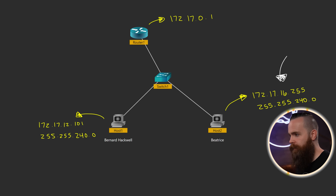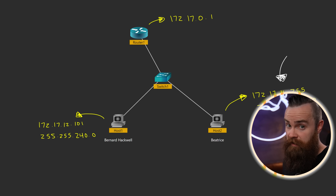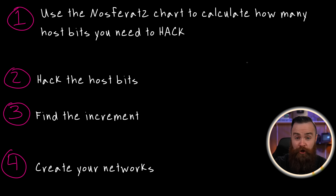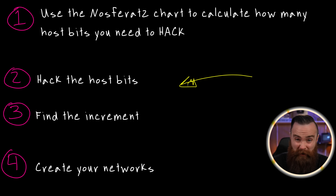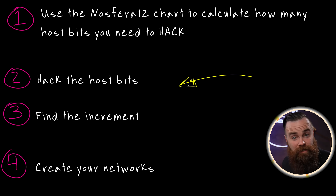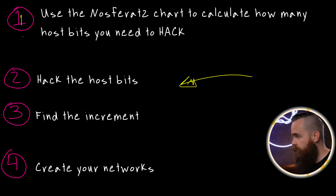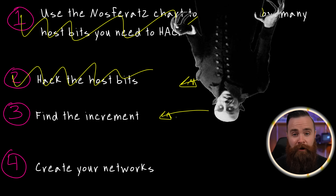Let's reverse subnet this and see what's wrong with Beatrice's IP address. Some of you are probably already seeing it. The good news is you already have the skills — you just have to approach it differently, and it's actually not too bad. Most of what we were doing was figuring out the subnet mask, and we already have that, so half the work is done. We can remove steps one and two and jump right into step three.